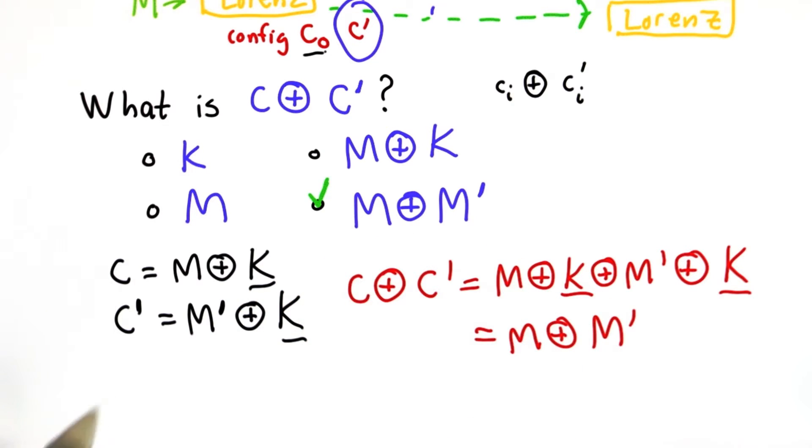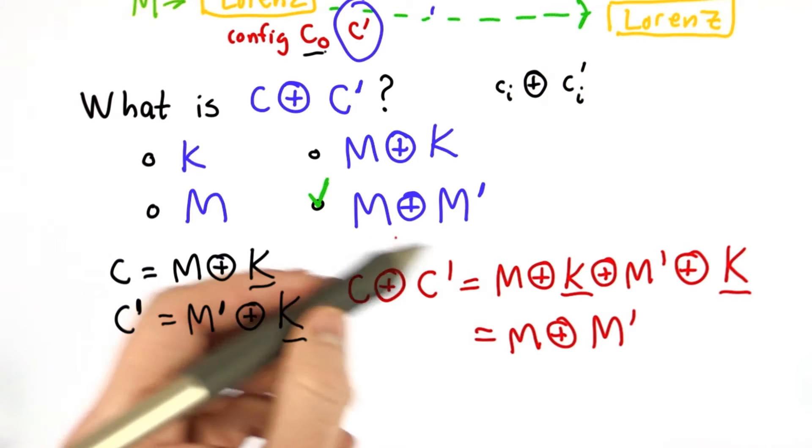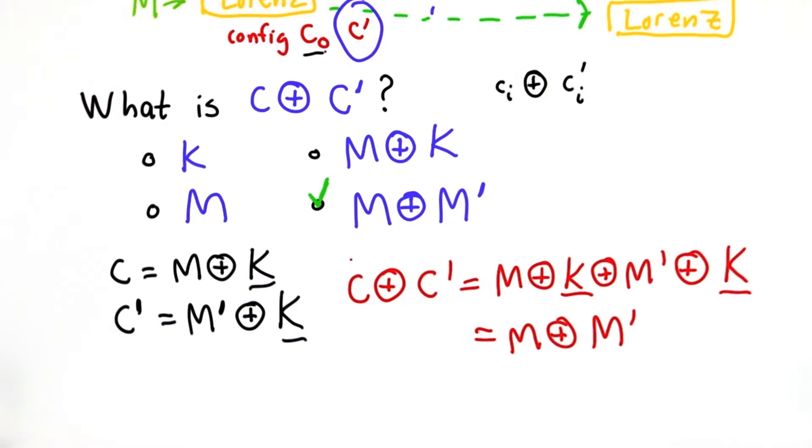So that doesn't tell right away what the message is. If the messages were exactly the same, m xor m prime would just be zero, and this wouldn't tell us anything. The ciphertext xord will be zero. But they weren't exactly the same. So when the allies xord these ciphertexts, they didn't get all zeros.